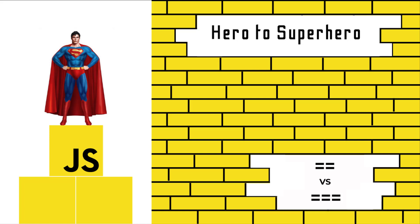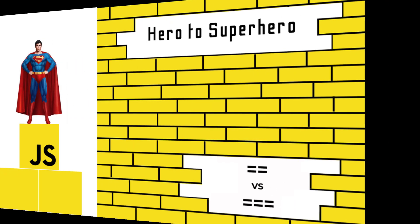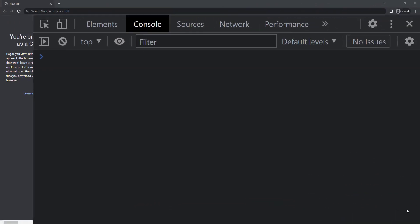In this video I'm going to talk about the equality operator — that means double equals — and the strict equality operator — that means triple equals. As part of the JavaScript Zero to Hero series, in the operators tutorial I explained a bit about double equals and triple equals. Let me explain in depth here.